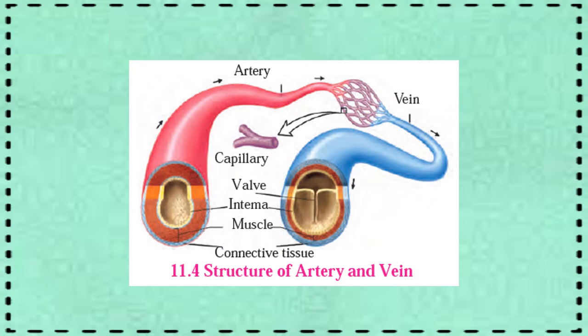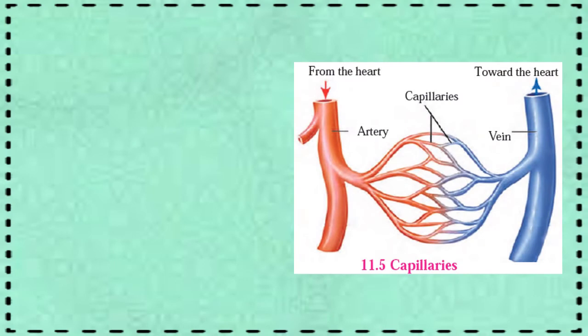This is the structure of arteries and veins, along with the various parts present in them. Next, we have capillaries. Arteries gradually branch out with a decrease in diameter as they spread in the body, and finally form fine hair-like vessels called capillaries. As you can see in the diagram, the pipe on the left-hand side is an artery that branches out into thin hair-like structures — those are the capillaries.